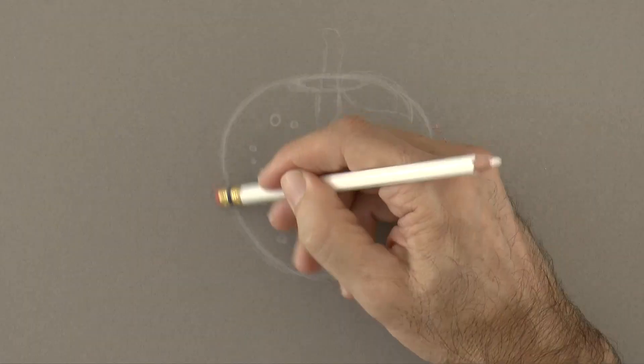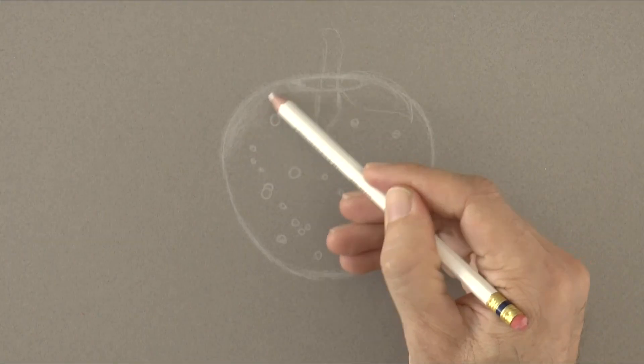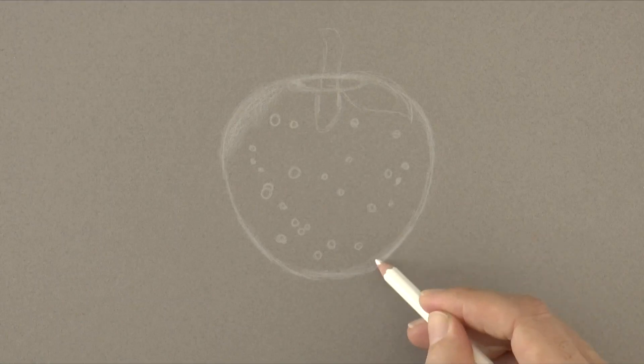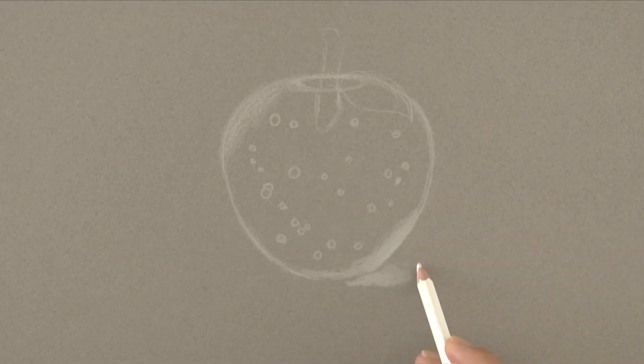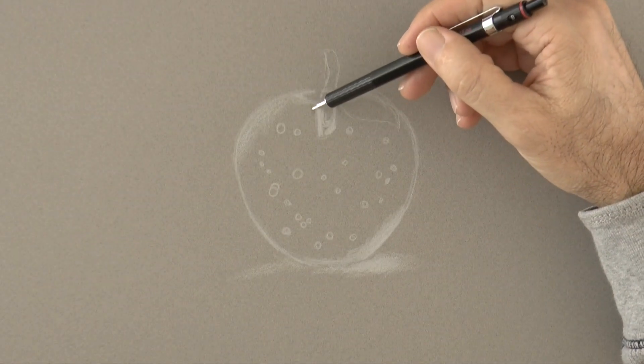The lighting for this drawing will be coming from the top left, like this. Therefore here will be a reflection, then the light comes through the object and hits the other side. So it illuminates the bottom right of the apple, as it is transparent.